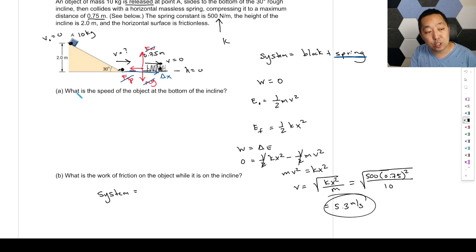So the system, because there's a change in height, we're going to make it the block plus the earth. Do I need to include the spring? Well, the spring's not being compressed at all. So it doesn't really matter. During both times, the spring is going to be relaxed during this motion. So it doesn't really matter to include the spring.